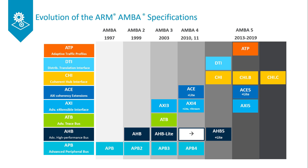In 2019, the AMBA ATP adaptive traffic profiles were introduced. ATP complements the existing AMBA protocols and is used for modelling systems' masters and slaves' high-level memory access behaviour in a concise, simple and portable way.